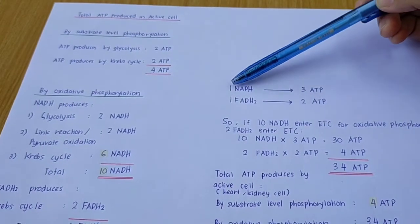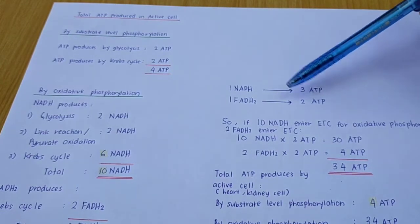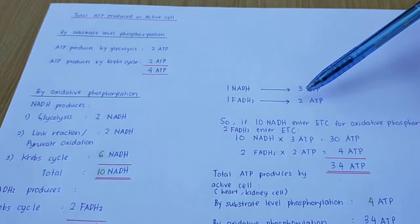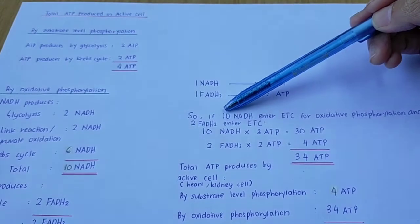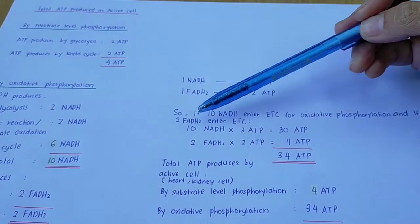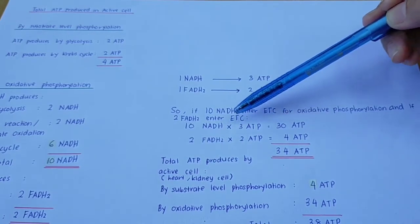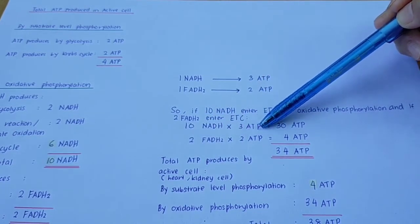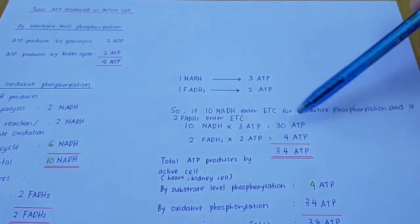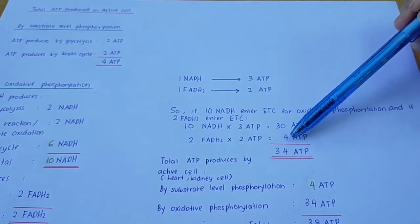If 1 NADH undergoes oxidative phosphorylation, it will produce 3 ATP. While if 1 FADH2 enters the electron transport chain, it will produce 2 ATP. So with 10 NADH, you multiply by 3 ATP, giving a total of 30 ATP from NADH. And 2 FADH2 multiplied by 2 ATP gives 4 ATP. So the total ATP produced by oxidative phosphorylation is 34 ATP.